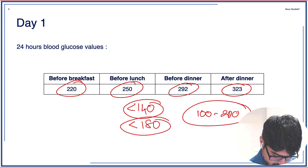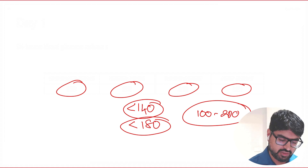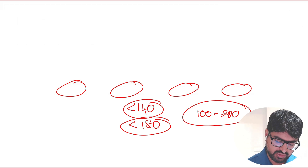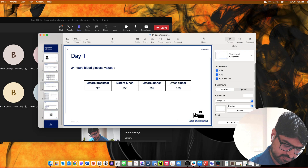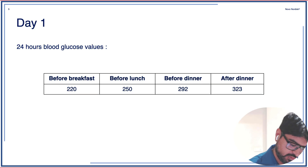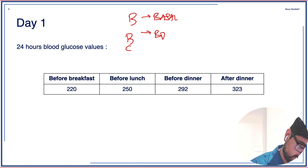So this is what we did for the patient. For this patient, we would try to control blood glucose using a BBC approach — that is basal, bolus, and correctional dose of insulin.